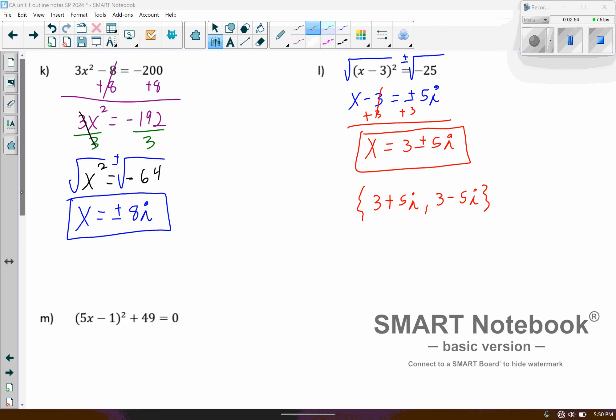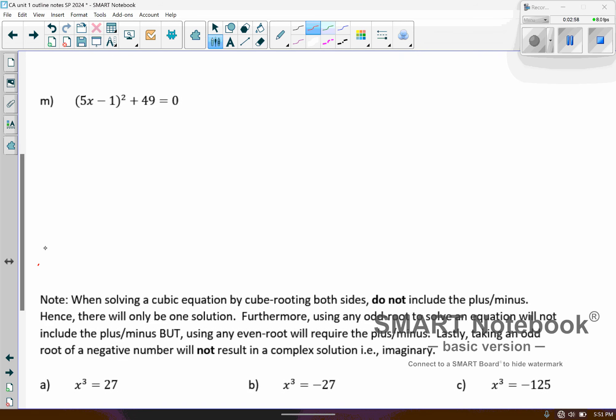All right, so continuing on to example M. Here we want to isolate that squared quantity. So we're going to subtract 49 from both sides. And now we'll go ahead and square root both sides, put that plus minus right there. So we have 5x minus 1 equals plus or minus 7i. And now we need to add 1 to both sides. So now we've got 5x equals 1 plus or minus 7i.